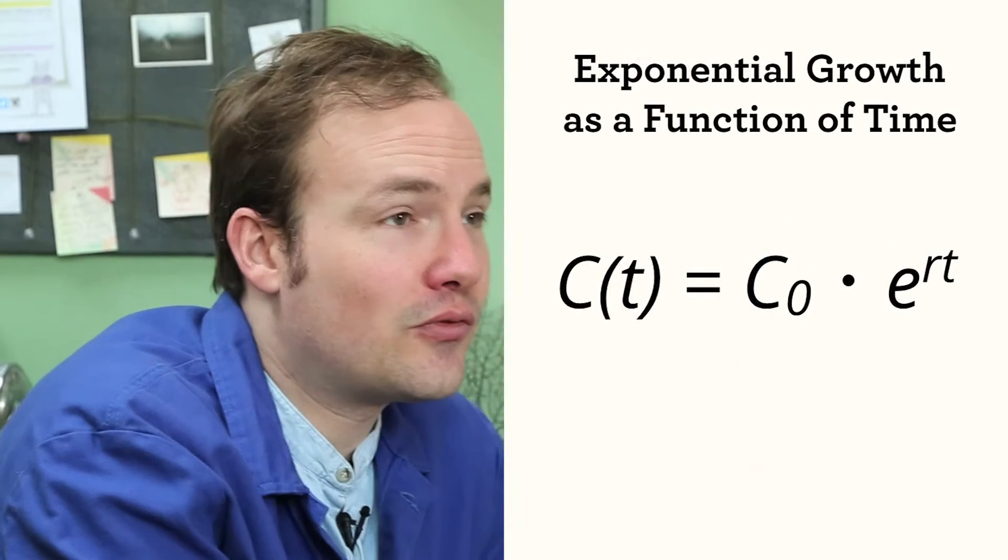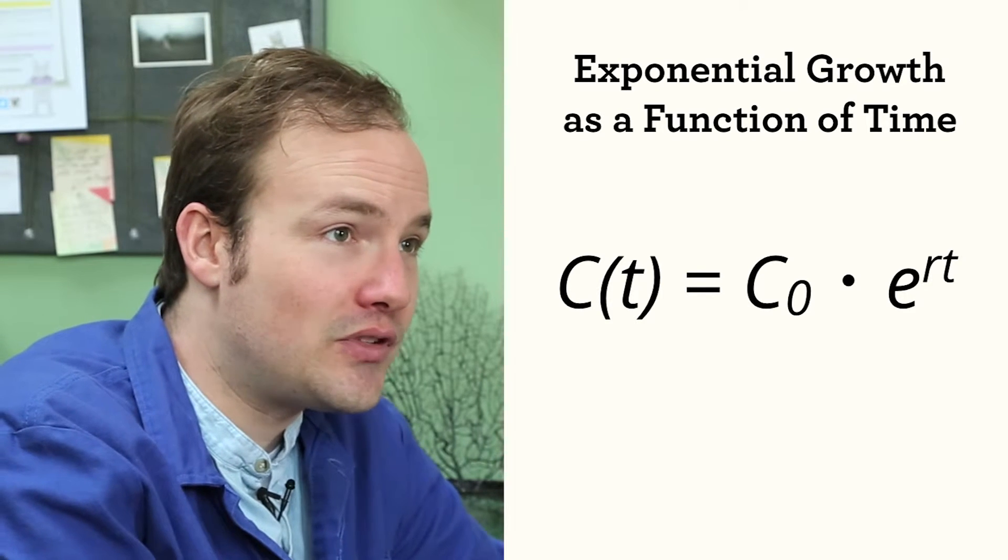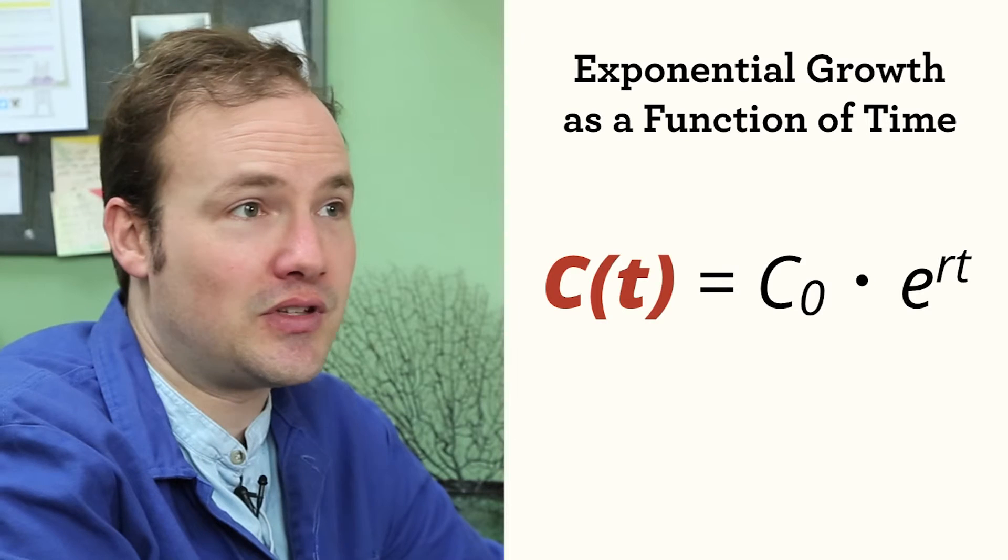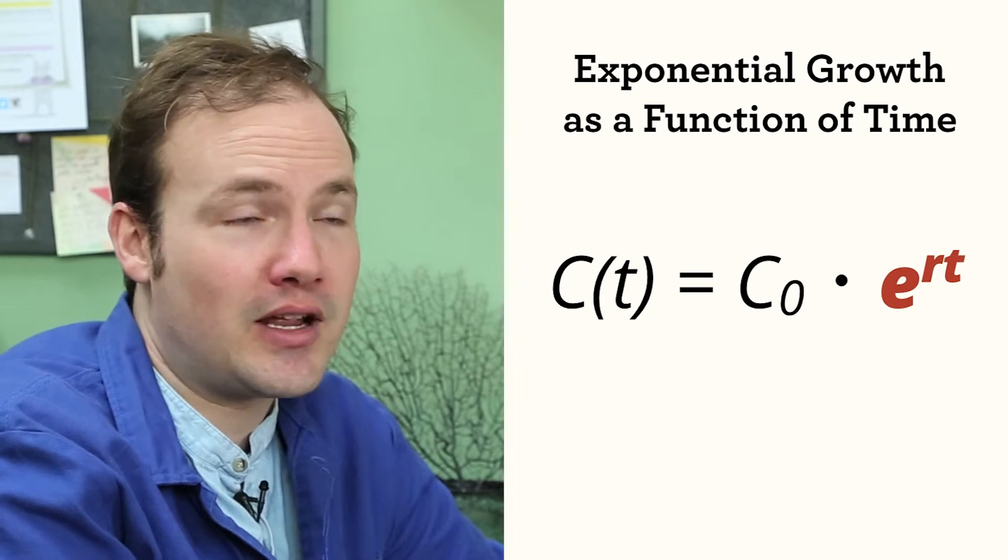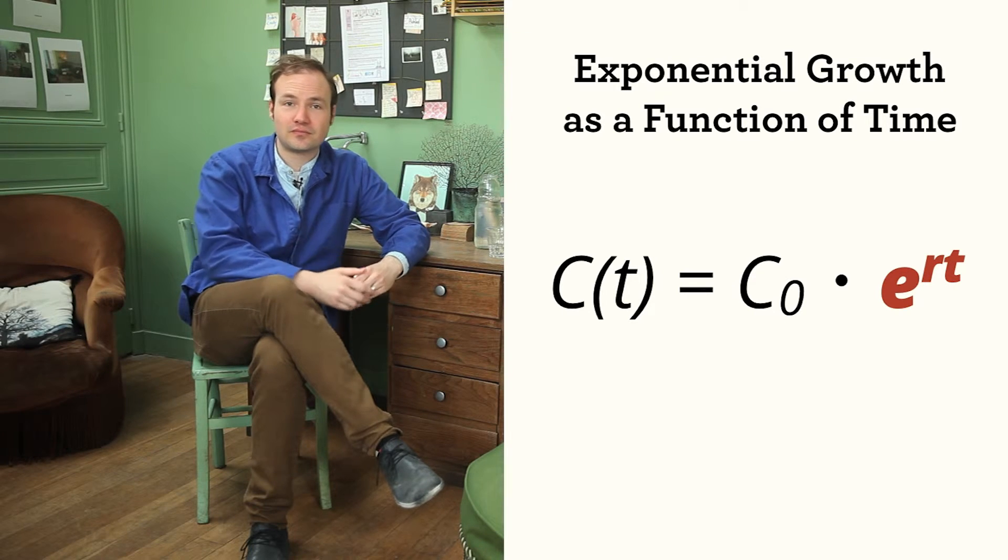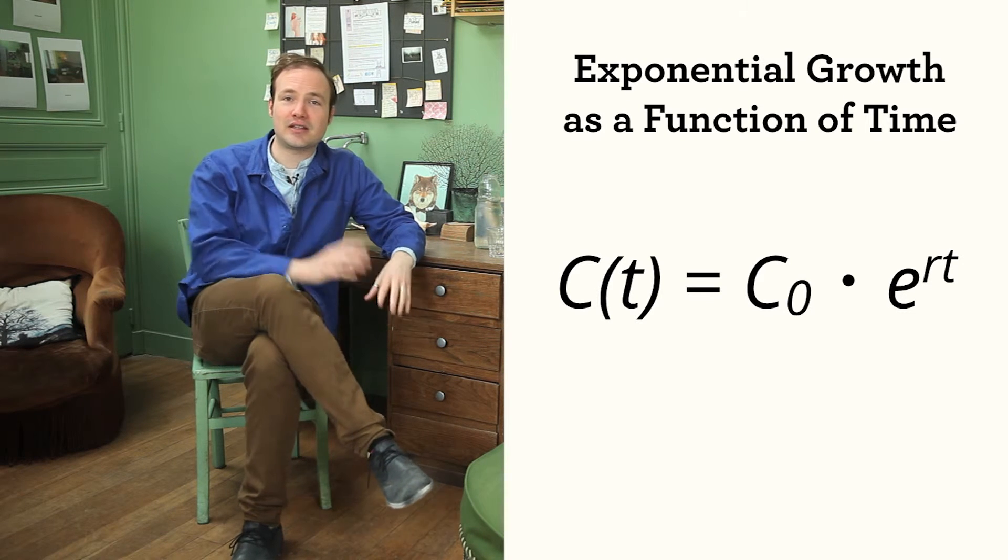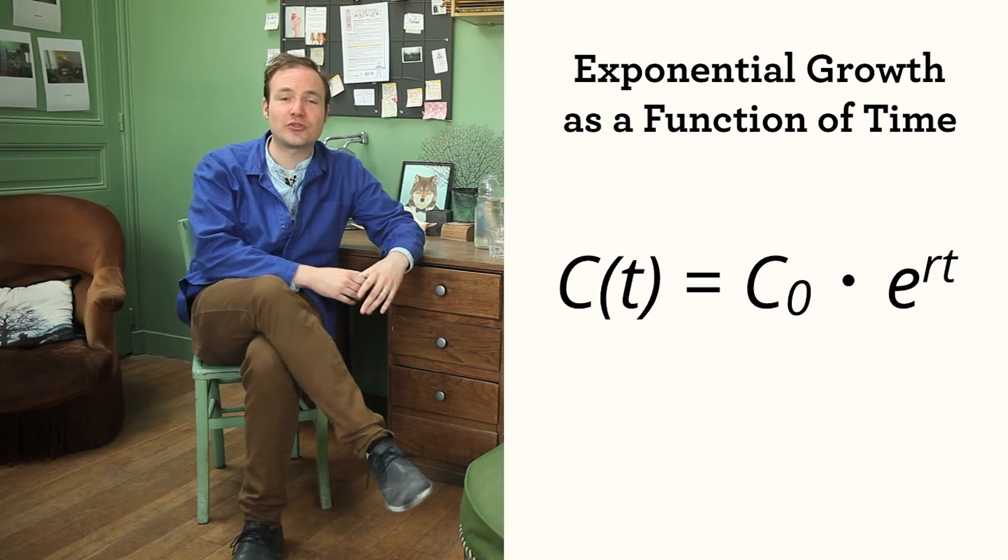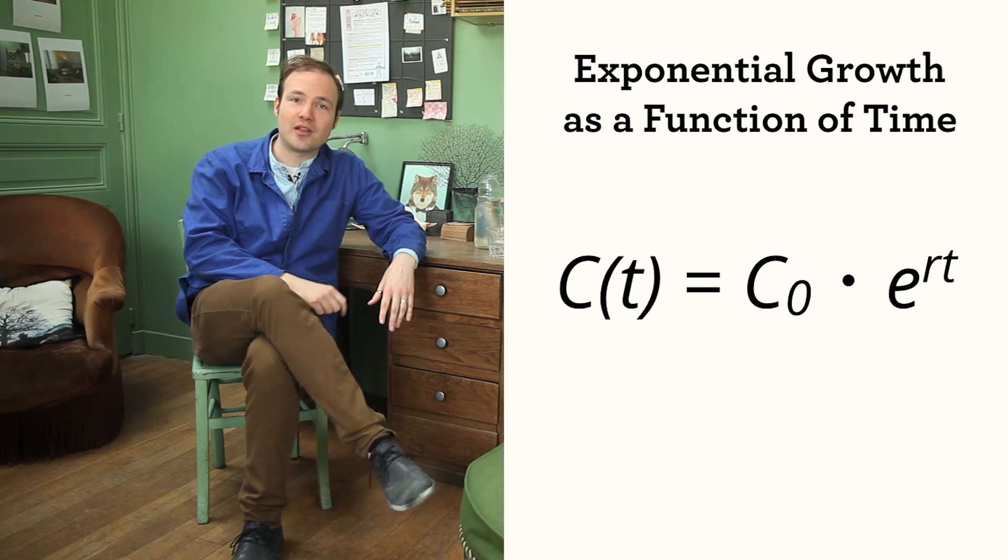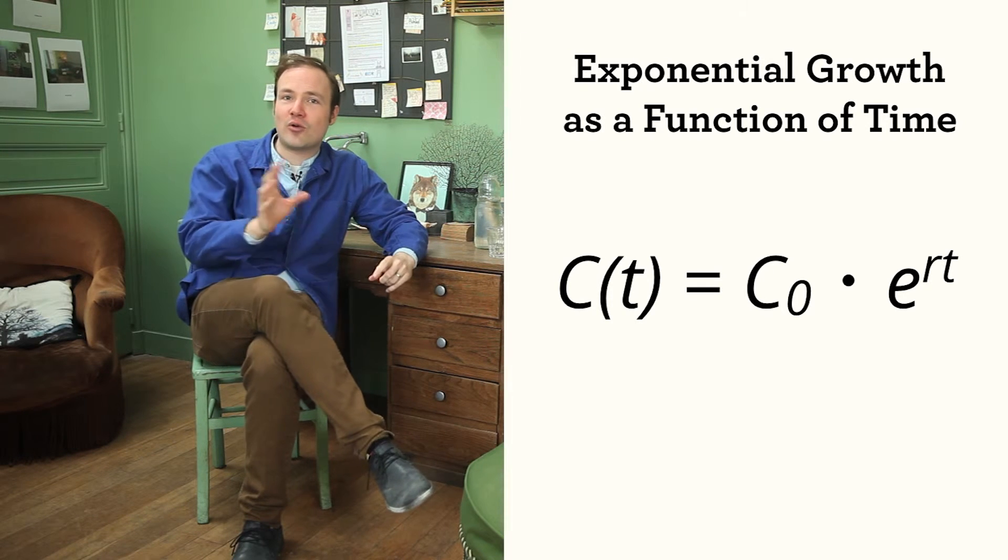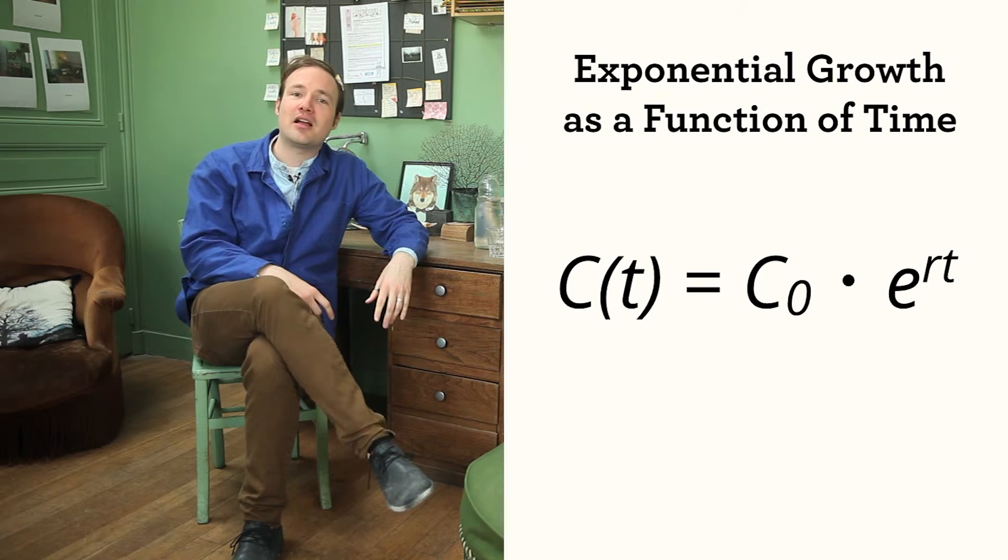The differential equation for exponential growth has an exact solution, shown here. The total number of cells, C, is equal to the starting number of cells, C0, and an exponential term including the growth rate and time. Now we could plug these equations into a computer and calculate the exact number of cells that we expect to produce given a number of starting cells and a length of time. But you and me, we're not computers. I want to find something human in this equation. I want to ask, how does this equation make me feel?